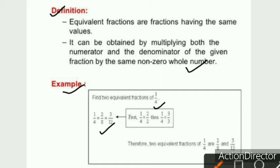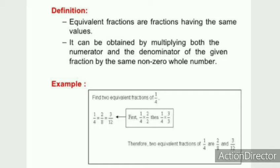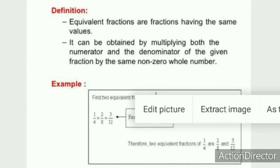We multiply one upon four by natural numbers starting with two, because multiplying by one gives the same number. Multiplying one upon four by two: one times two is two and four times two is eight, giving two upon eight. Multiplying one upon four by three: one times three is three and four times three is twelve, giving three upon twelve. Therefore, two equivalent fractions of one upon four are two upon eight and three upon twelve.